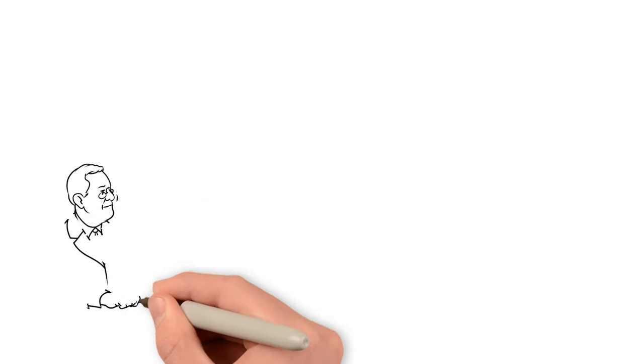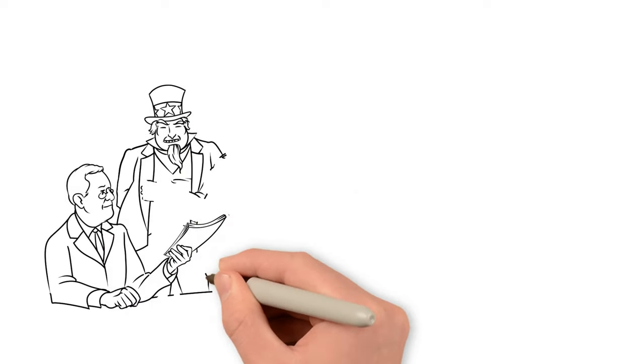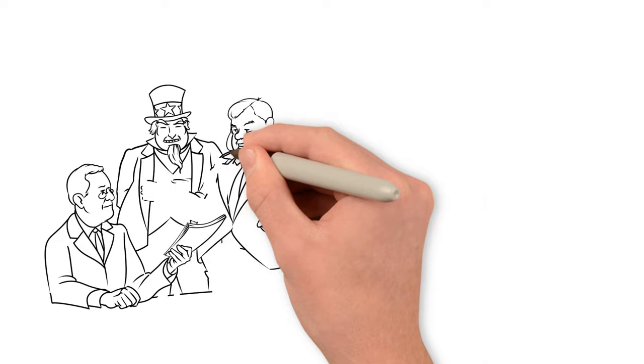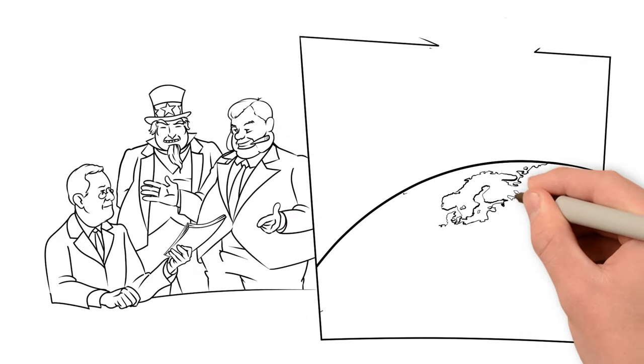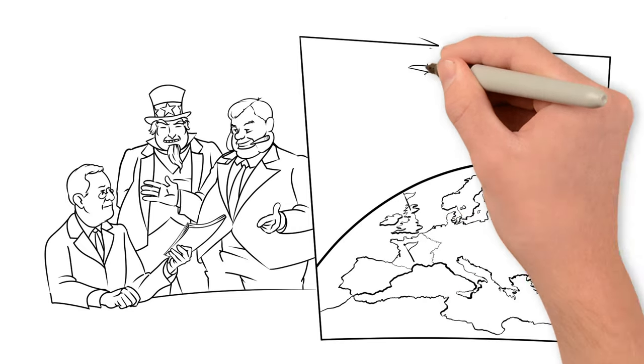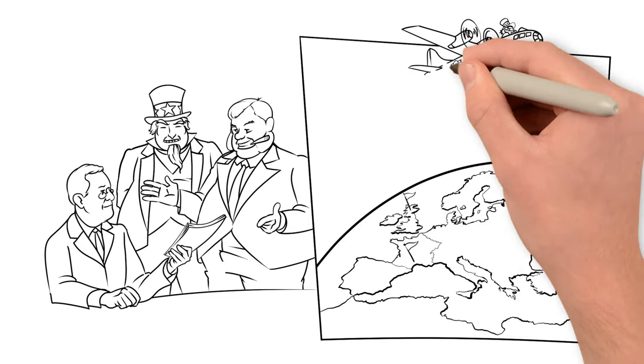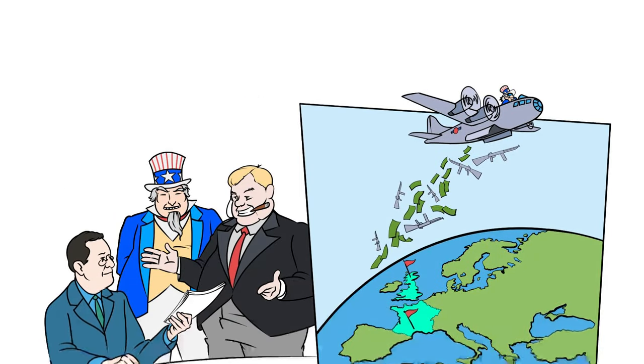After Germany invaded Poland, President Franklin Roosevelt convinced Congress to approve his cash-and-carry program to sell arms to France and Britain. The following year, he replaced cash-and-carry with lend-lease, which loaned weapons to cash-strapped allies. Lend-lease established the precedent of American subsidization of foreign armies.